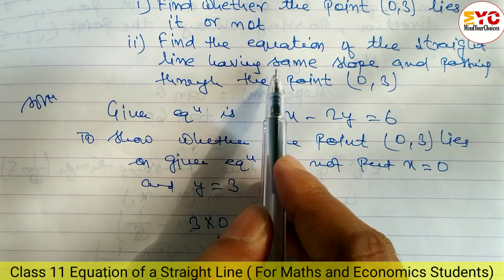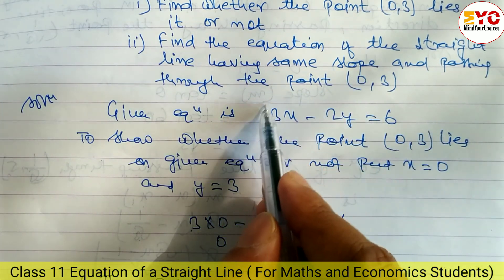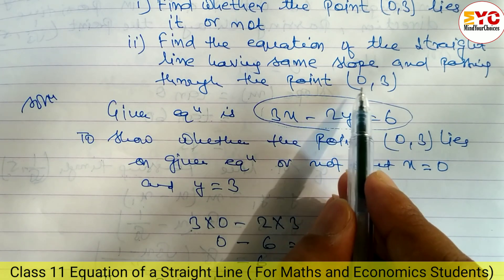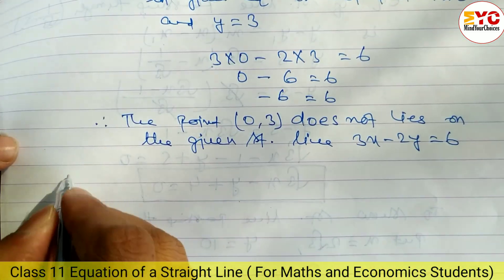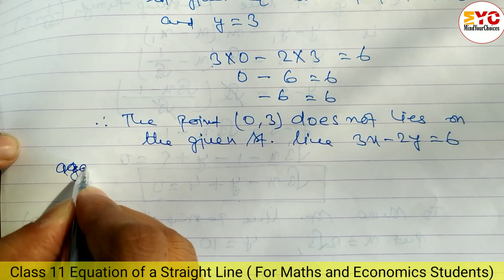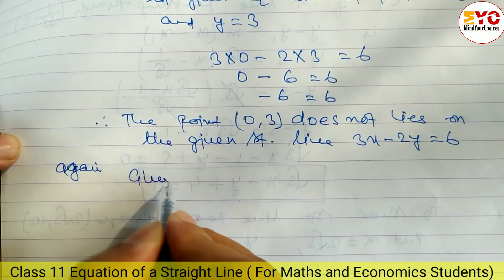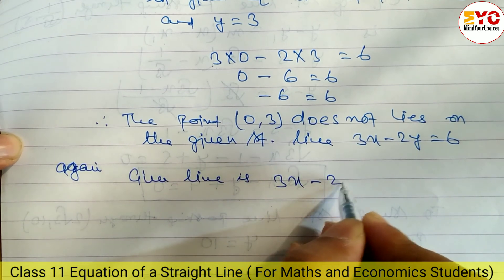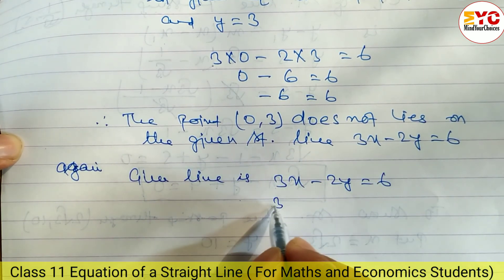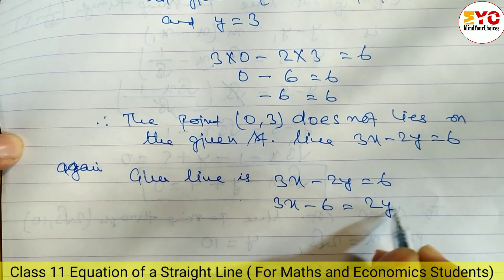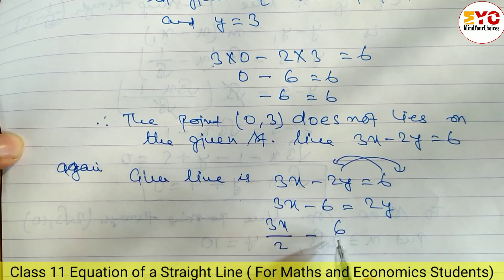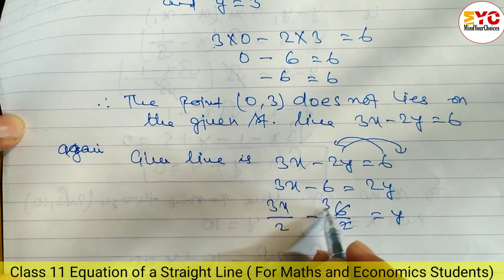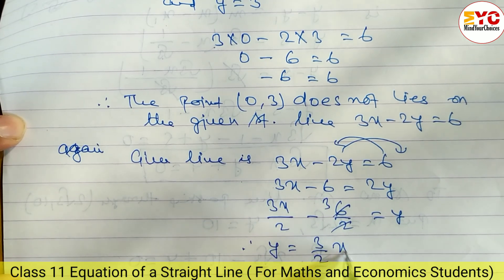Next part: find the equation of a straight line having the same slope but passing through the point (0, 3). First we find the slope of the given line 3x - 2y = 6. Rearranging: 3x - 6 = 2y, so y = (3/2)x - 3. Comparing with y = mx + c, slope m = 3/2.